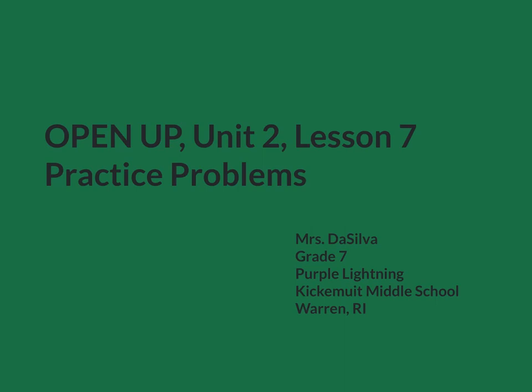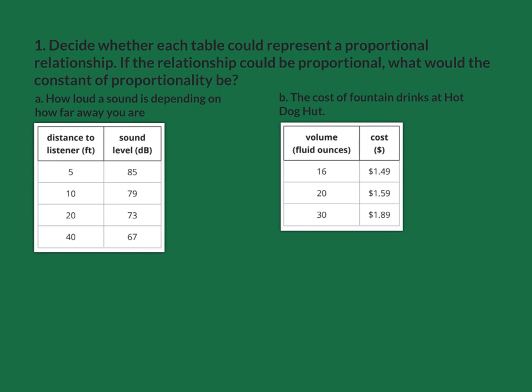Our next lesson of practice problems is for Unit 2, Lesson 7. The first thing we need to do is decide whether each table could represent a proportional relationship or not. And if it is proportional, we need to identify the constant of proportionality.